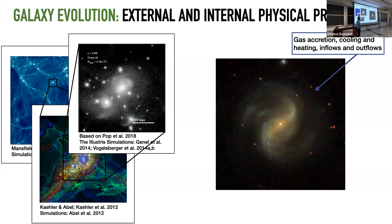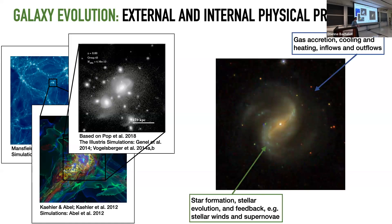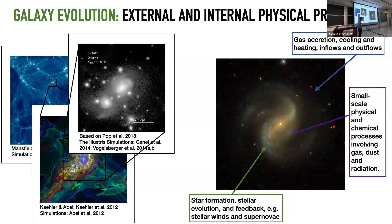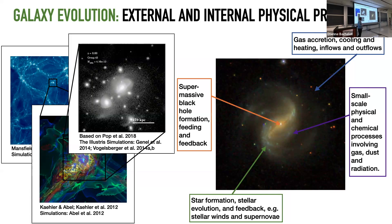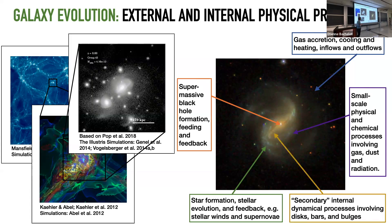On the internal part, you have how gas accretion, cooling, heating, inflows, and outflows work within the halo of a galaxy; how star formation, stellar evolution, and feedback determine the stellar populations; how stellar winds and supernovae change the ISM; how small-scale chemical processes distribute composition; how supermassive black hole formation and feedback changes the galaxy; and how dynamical processes such as discs, bars, spiral arms, and bulges change its appearance.